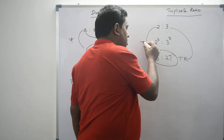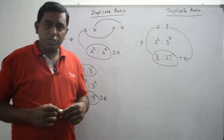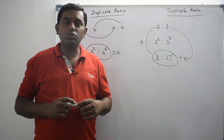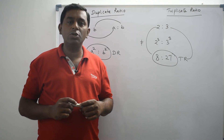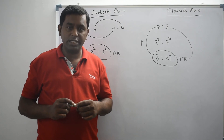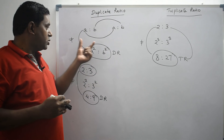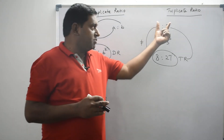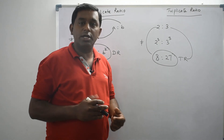Note that these two ratios are not equal. To get the duplicate ratio for a given ratio, you have to square both the first term and second term. To get the triplicate ratio, you have to take the cube of the first term and second term. The given ratio and its duplicate ratio are not equal, and similarly, the given ratio and its triplicate ratio are not equal.